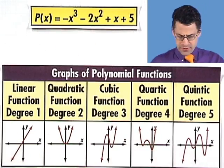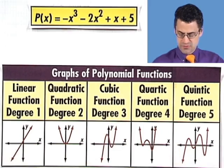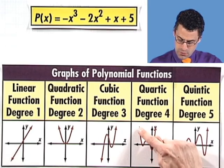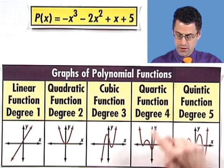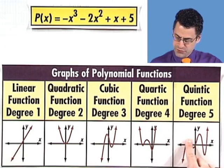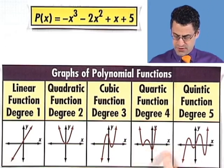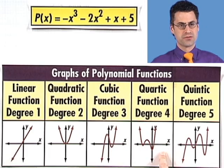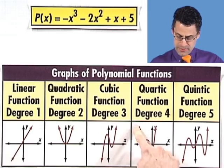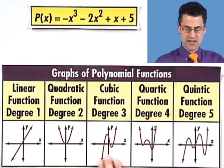If we have degree 3, we're going to potentially have 2 bends. Degree 4 might have as many as 3 bends. Degree 5 might have as many as 4 bends. So for example, if someone showed me this graph, I would never guess that it was a degree 1, 2, or 3 polynomial because it has too many bends.